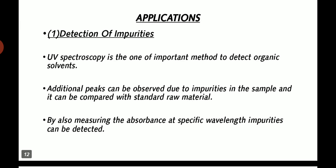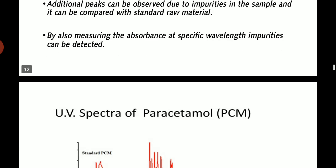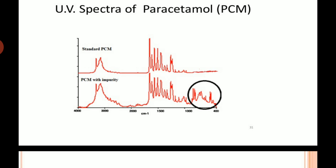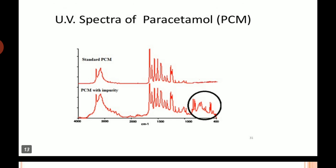Applications of UV spectroscopy. First, detection of impurities. UV spectroscopy is one of the important methods to detect organic solvent impurities. Additional peaks can be observed due to impurities in the sample and it can be compared with standard raw material. By also measuring the absorbance at specific wavelength, impurities can be detected. This is the spectrometer of paracetamol. See in the diagram, standard paracetamol on the upper and paracetamol with impurity at almost 400 nm.